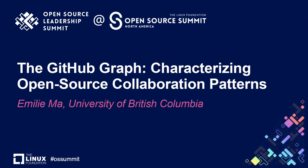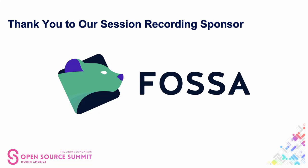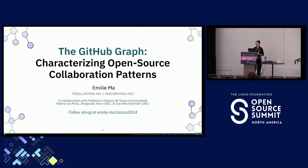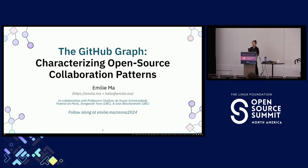I'm Emily, an undergrad at the University of British Columbia and software developer. You can reach me at hello@emily.ma, and you can follow along with the slides for this talk at emily.ma/OSSNE2024. I've recently had the privilege of working with professors Clayton D'Souza, Dong Wook Yun, and Ivan Bishosnik at UBC on the topic of understanding open source collaboration work practices empirically in the real world. We've uncovered some hidden context and unspoken patterns in open source collaboration that GitHub and other developer platforms don't reveal, and today I'll be talking about how we highlighted that.